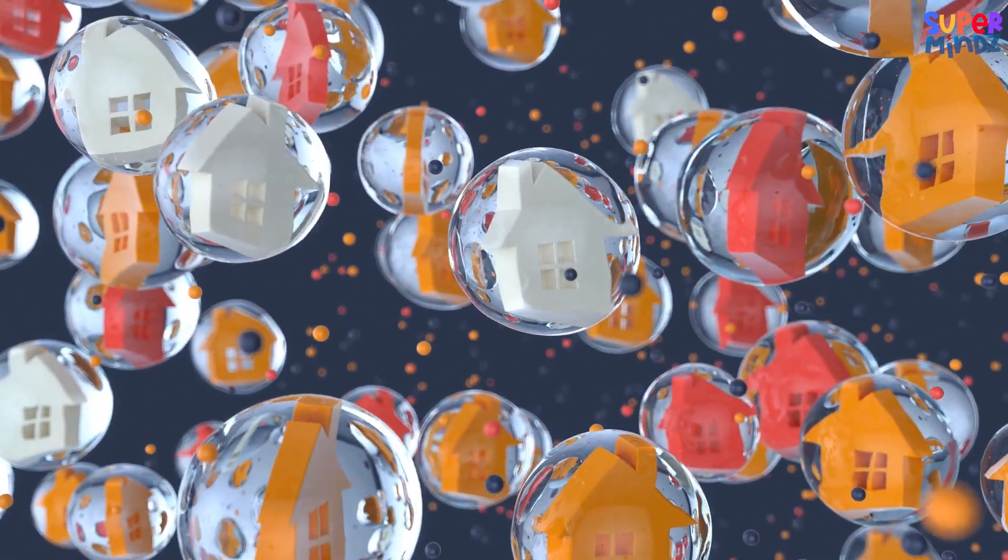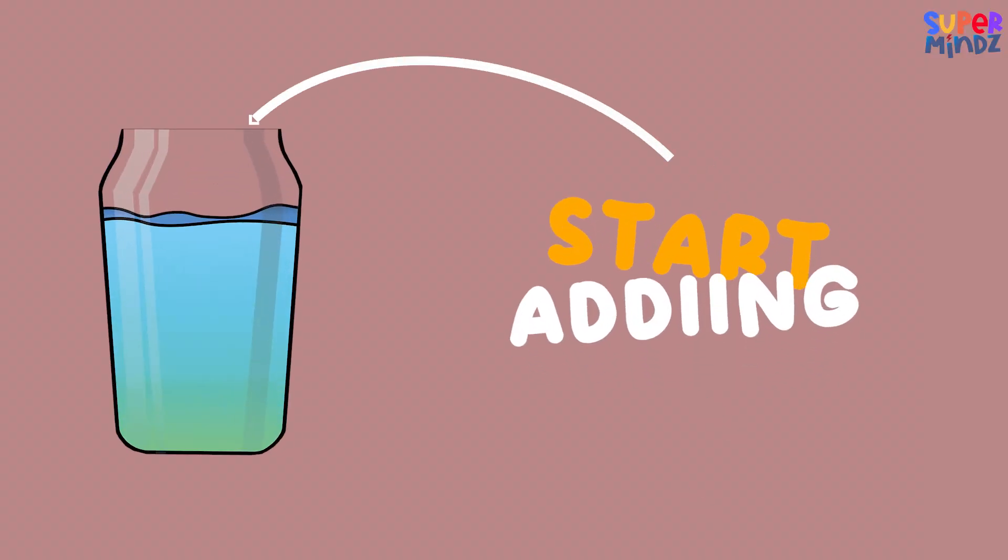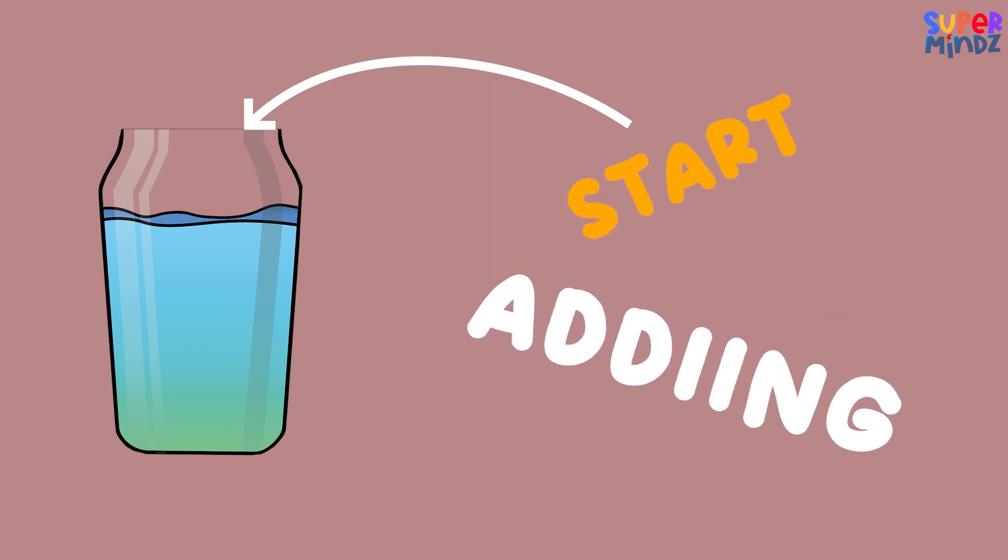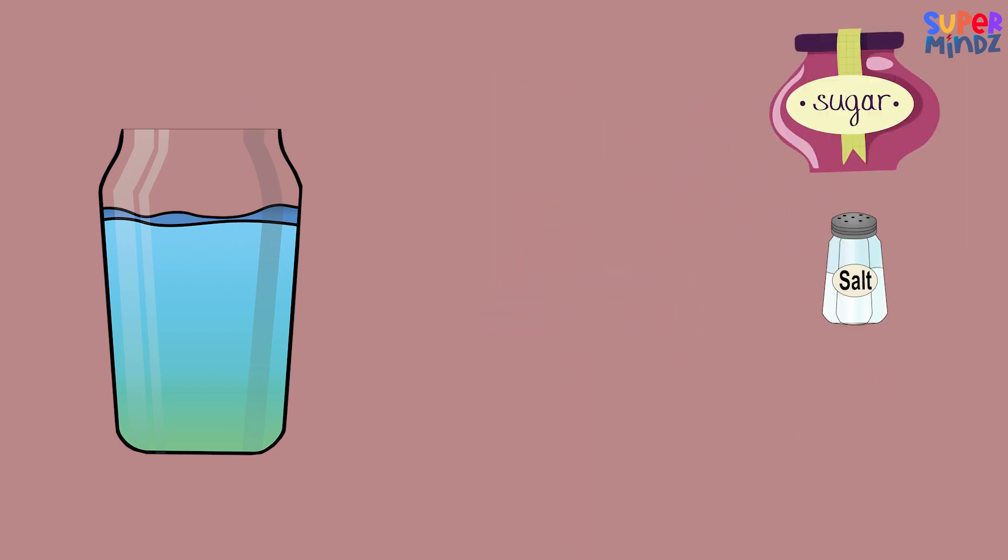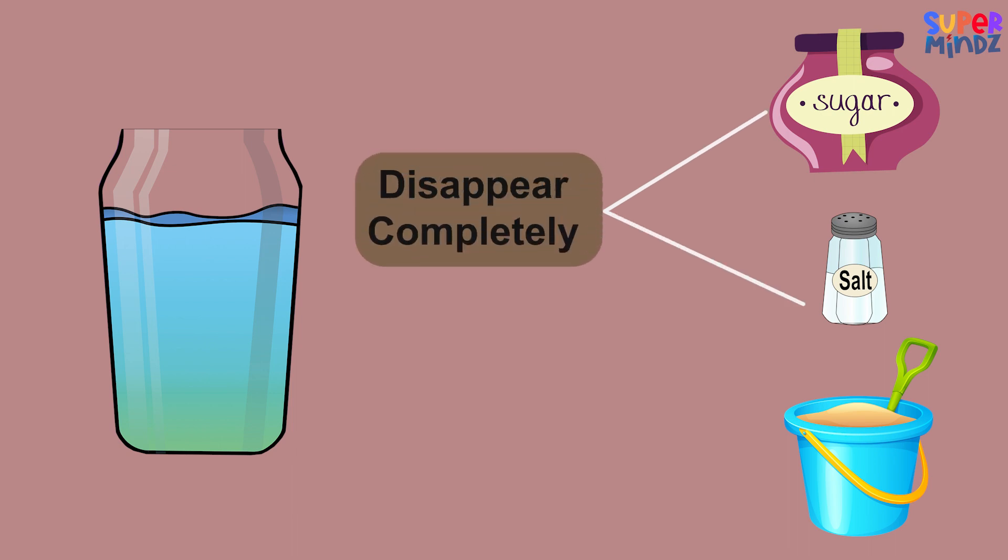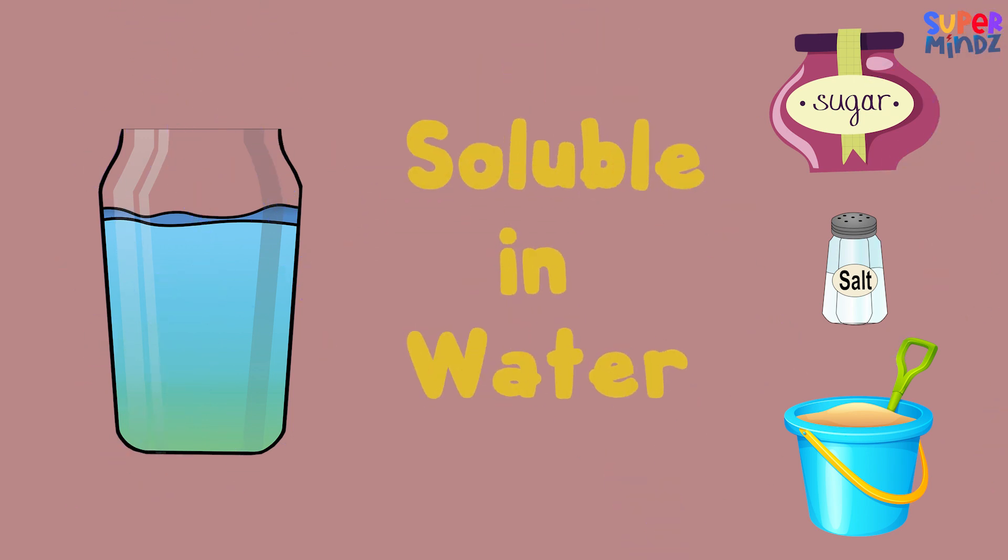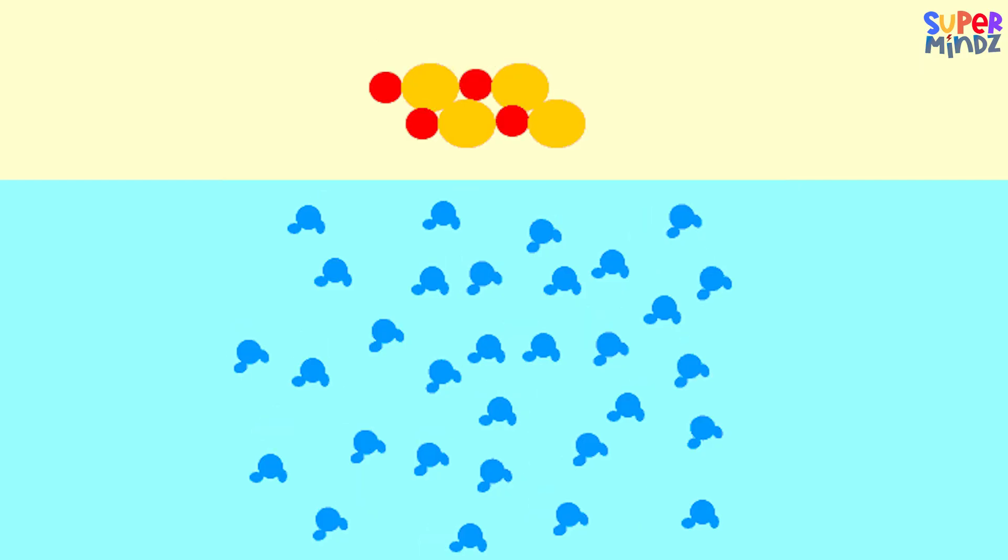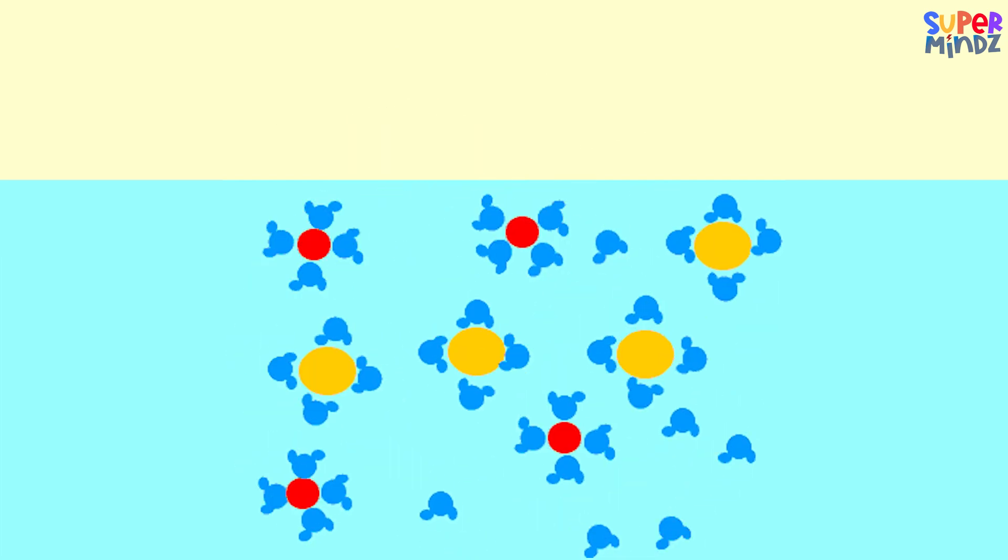Now imagine you have a big jar of water and you start adding different things to it like sugar, salt, and sand. Sugar and salt disappear completely when you stir them into the water, right? That's because they're soluble in water. They're like little particles that love to mix with the water molecules, so they spread out and become one with the water.